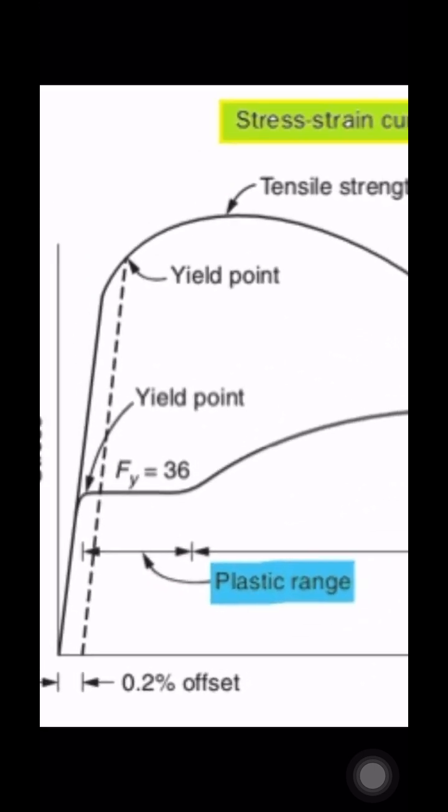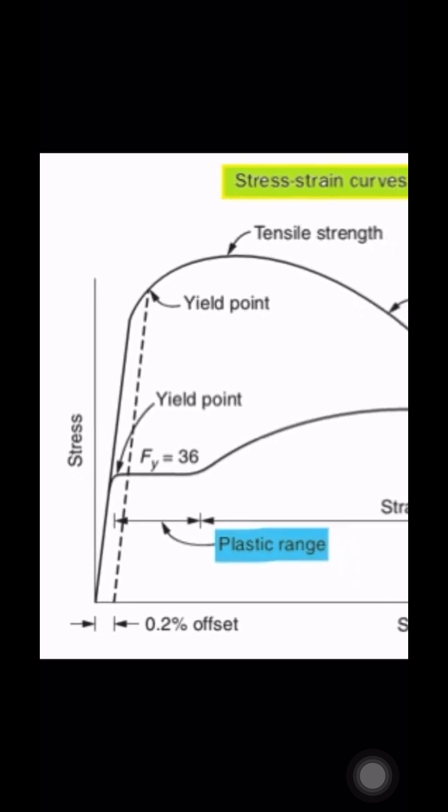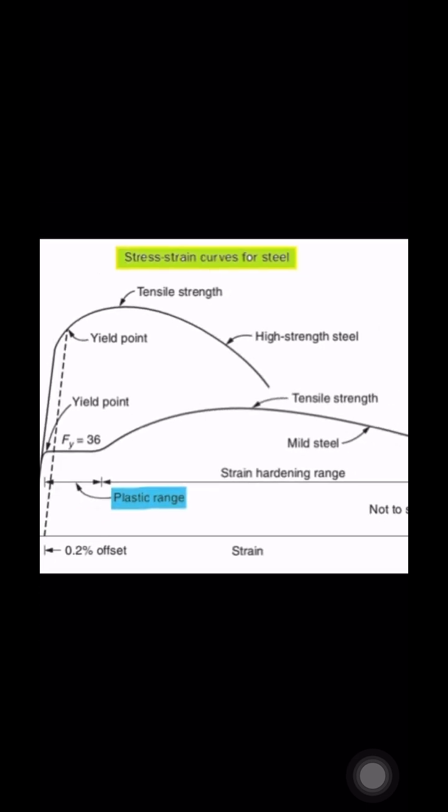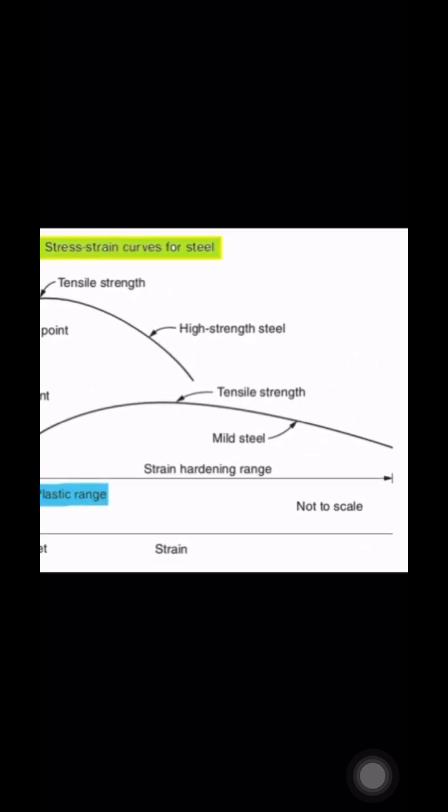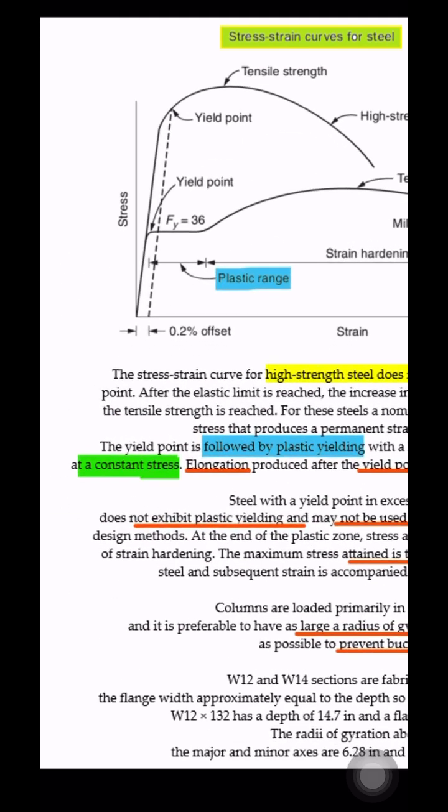For these steels, the nominal yield stress is defined as the stress that produces permanent strain of 0.2%. The yield point is followed by plastic yielding with a large increase in strain occurring at constant stress. Elongation produced after the yield point is permanent and non-recoverable.